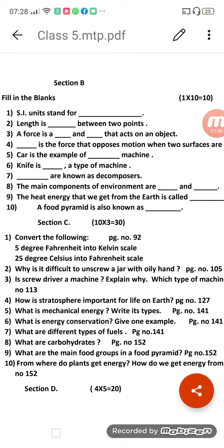Then fifth fill in the blanks: Car is an example of dash machine. Car is the example of complex machine. And six, knife is dash a type of machine. You know very well how many kinds of simple machines are there, and out of that knife is which kind of machine - wedge. Seventh, dash are known as decomposers - microorganisms.